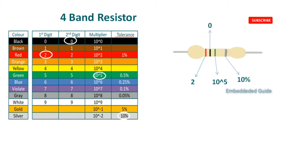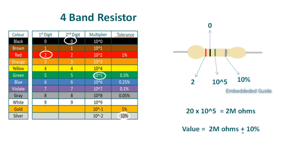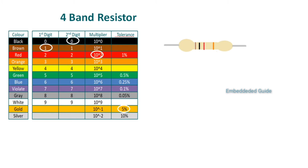Now we can calculate the resistor value. If we combine these values, the first digit is 2 and the second digit is 0. The multiplier is 10 to the power of 5. So the resistor value is 20 × 10^5, which is 2 mega ohm. The resistance value is 2 mega ohm plus or minus 10% tolerance.